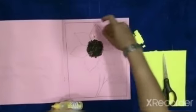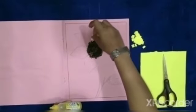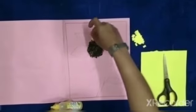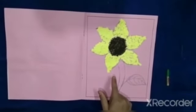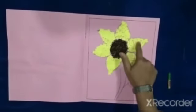And paste the yellow paper very slowly. Now you can see I have pasted the small yellow pieces of paper in each petal.